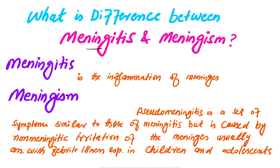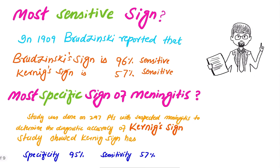What is the difference between meningitis and meningism? Meningitis is the inflammation of the meninges. Meningism is pseudo-meningitis — a set of symptoms similar to meningitis but caused by non-meningitic irritation of the meninges, usually associated with febrile illness, especially in children and adolescents. Which one is the most sensitive sign of meningitis?